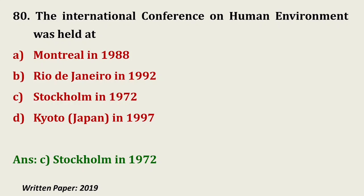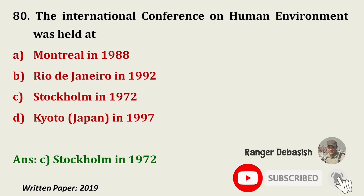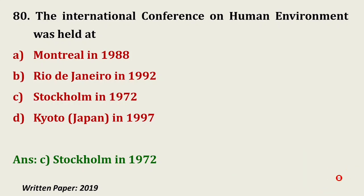Question number 80: The International Conference on Human Environment was held at — Montreal in 1988, Rio de Janeiro in 1992, Stockholm in 1972, or Kyoto in Japan in 1997? The answer is Stockholm in 1972, where the Stockholm Declaration was made. I have now discussed questions 61 to 80. Please subscribe to my channel and leave feedback on whether the videos are helpful or if any improvement is needed. See you in the next video from question number 81. Goodbye, Jai Hind!